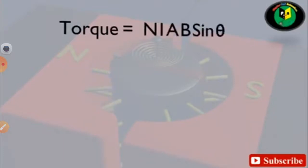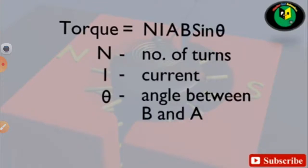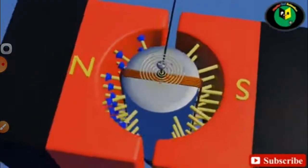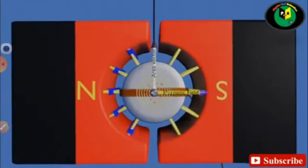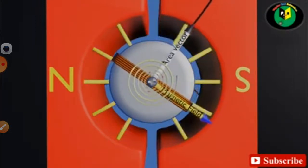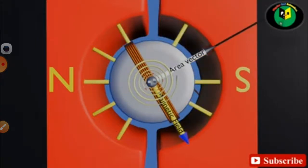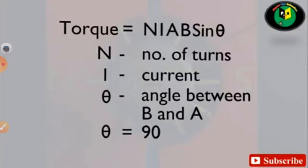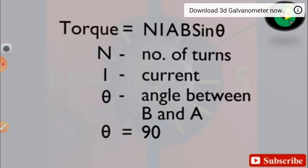The torque produced is given by the formula: T = N × I × A × B × sin θ, where N is the number of turns, I is the current flowing through the coil, A is the area of the conductor (coil), B is the flux density, and θ is the angle between the coil plane and the magnetic field. At θ = 90°, the deflection and torque are maximum.